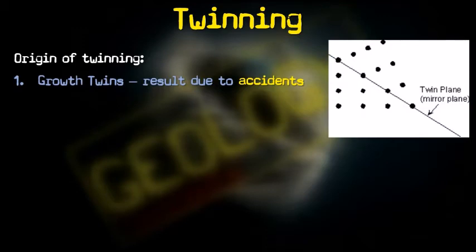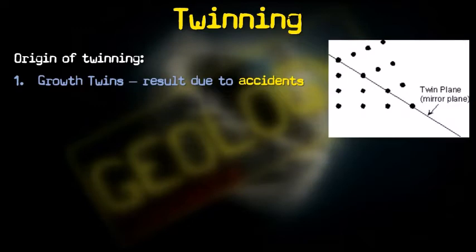How does twinning take place? The first cause is growth twinning, where accidents — meaning changes in stress conditions — occur during crystal growth. A new crystal is added to the face of an already existing crystal. Twinning can occur if the new crystal shares lattice points on the face of the existing crystal but has an orientation different from the original crystal. Such growth twins can be contact twins.